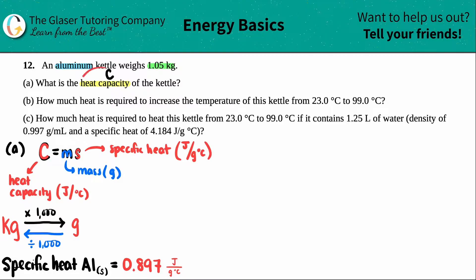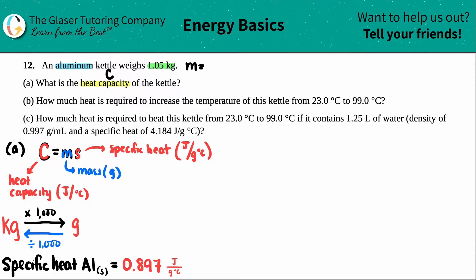We want to solve for the heat capacity C, so I just need to know my m and multiply it by my s. They told us we have a 1.05 kilogram aluminum kettle, so the mass is 1.05 kilograms. However, using this formula, the mass has to be in grams, so I have to convert kilograms into grams.